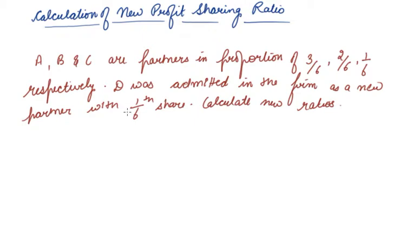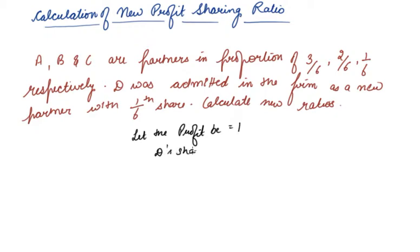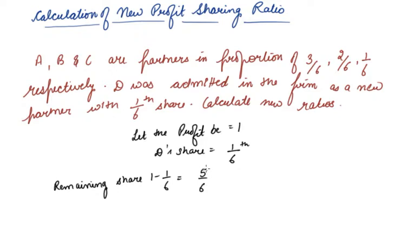When only the ratio of the new partner is given, then in the absence of any other agreement, it is presumed that the old partners will continue to share the remaining profits in the same ratio in which they were sharing before. Let the total profit be 1. D's share is given as 1/6, so the remaining share is 1 minus 1/6, which is 5/6.